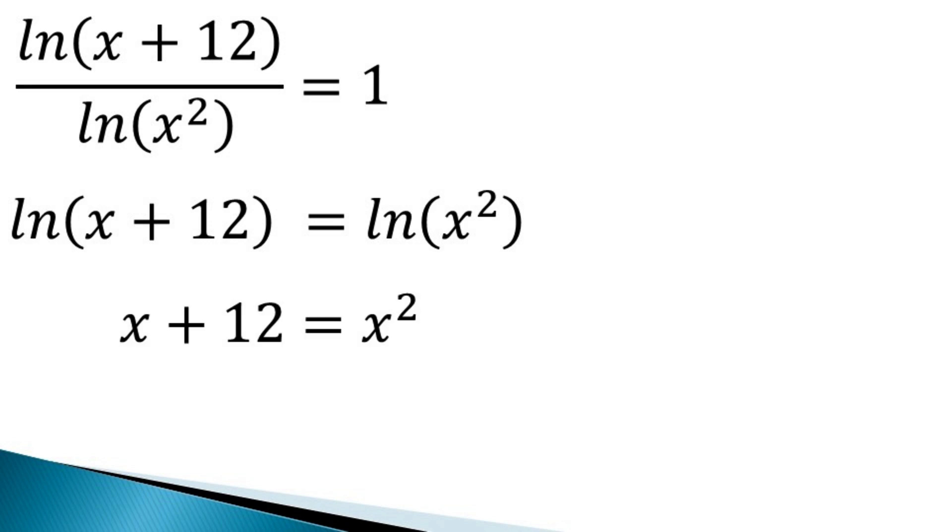Now transferring all the terms on one side, we get a quadratic equation as x square minus x minus 12 is equal to 0. So this equation can be factorized.